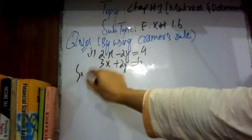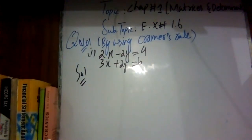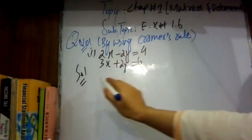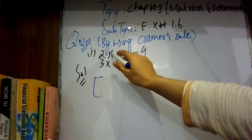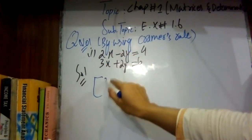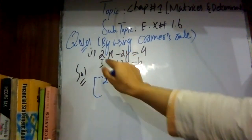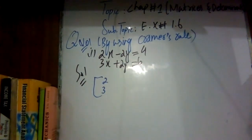We will solve this. In step one, first write down these linear equations in matrix form. This is very easy — the coefficients of x will come in the first column. In the first equation, the coefficient of x is 2, and in the second equation, the coefficient of x is 3. So these go in the first column.